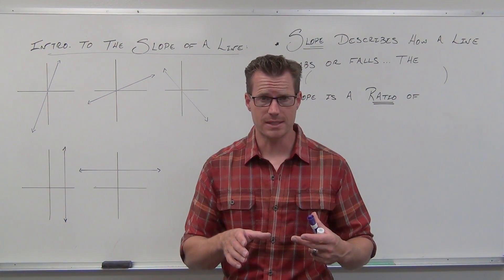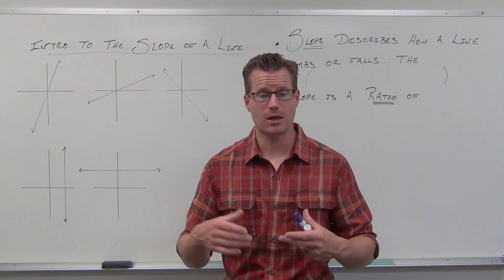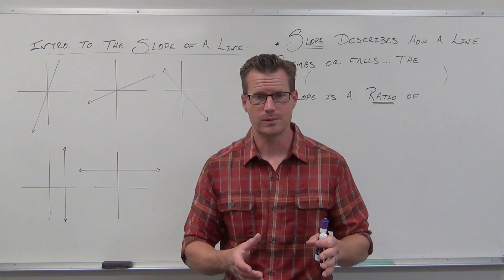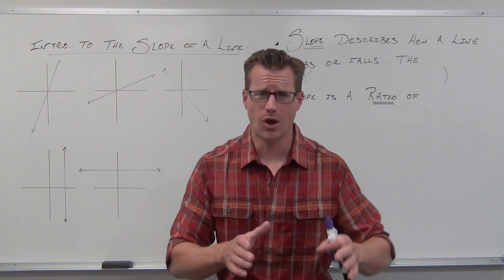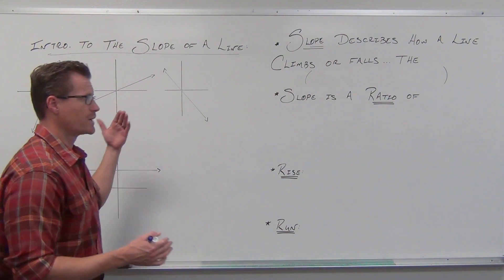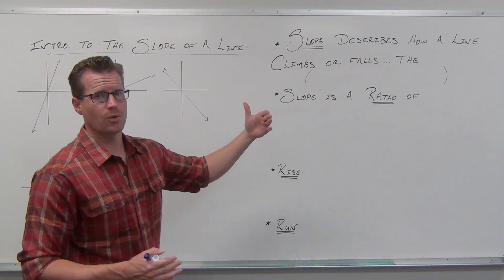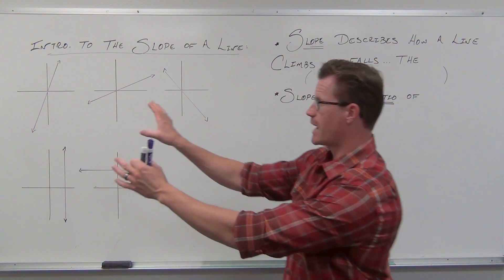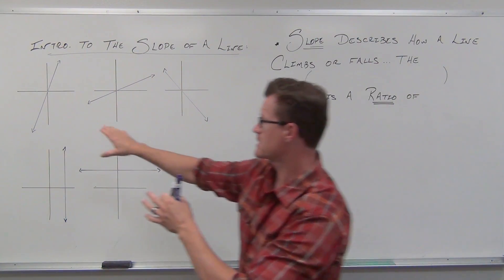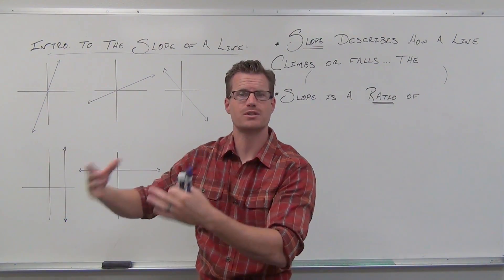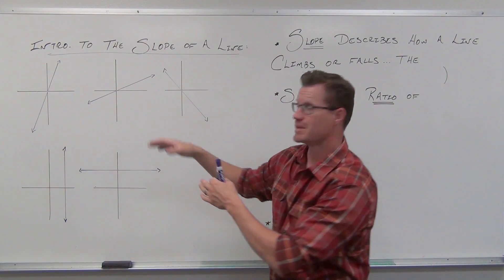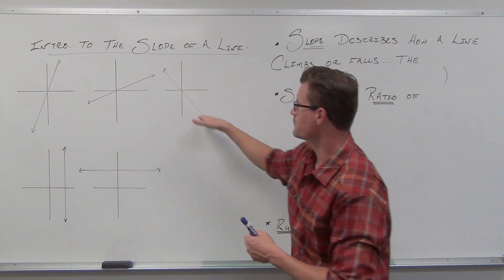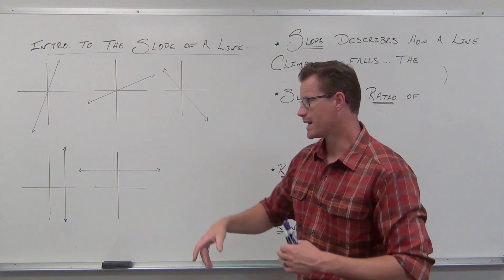The slope describes the way that a line is climbing or falling as we move from left to right. When we talk about climbing or falling — that's increasing or decreasing — when we talk about slope, it is always as if we're reading a book from left to right. We're always going to consider reading the graph as we move from left to right. So this line is climbing, and this line is also climbing, but less steep.